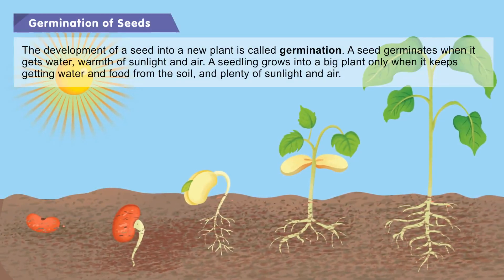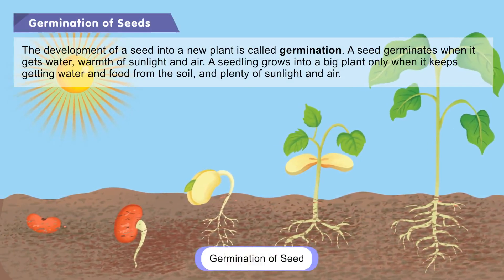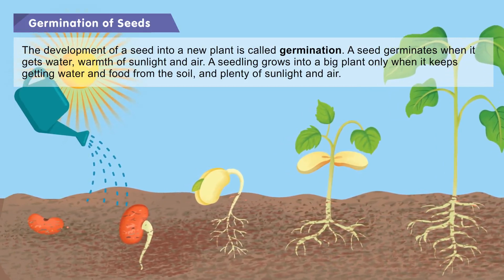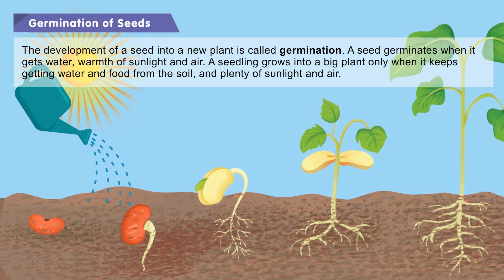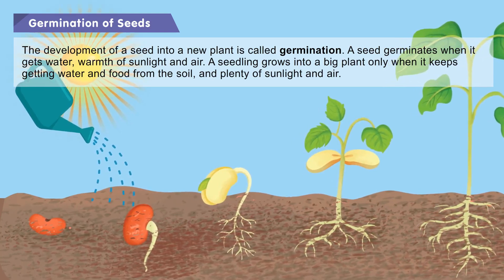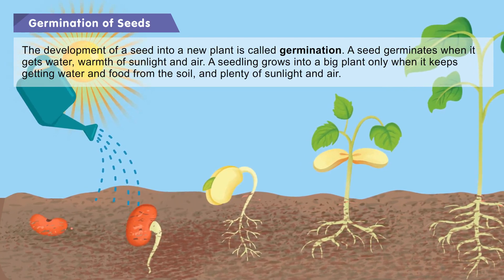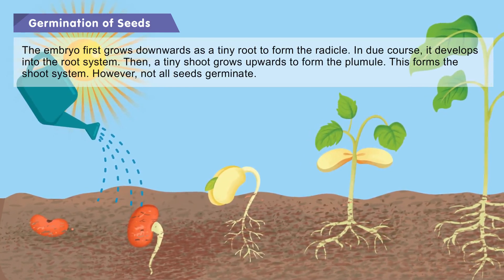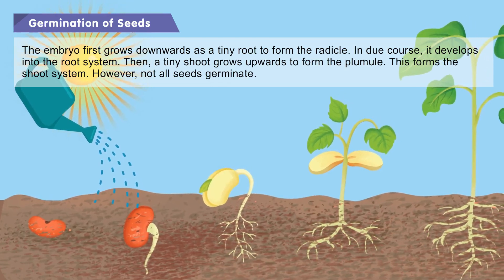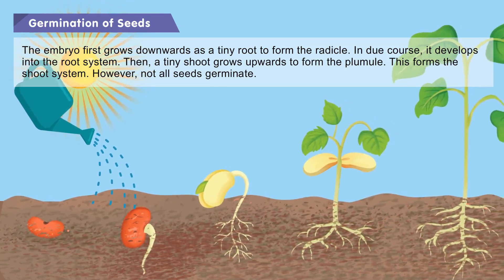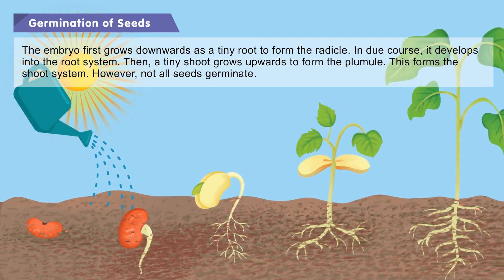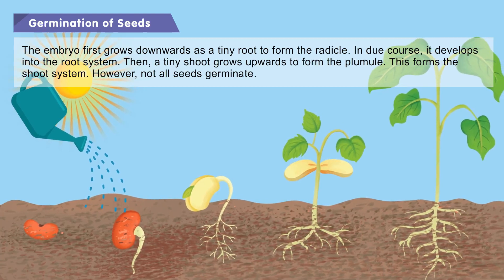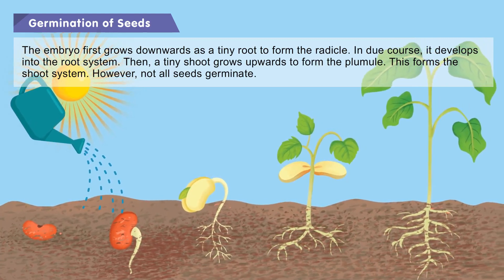Germination of seeds: The development of a seed into a new plant is called germination. A seed germinates when it gets water, warmth of sunlight, and air. A seedling grows into a big plant only when it keeps getting water and food from the soil and plenty of sunlight and air. The embryo first grows downwards as a tiny root to form the radicle, which in due course develops into the root system. Then a tiny shoot grows upwards to form the plumule, which forms the shoot system.